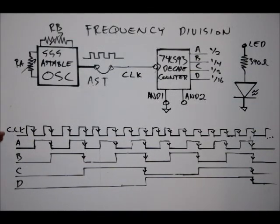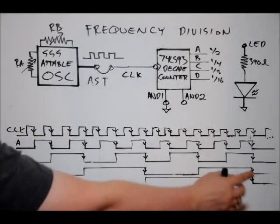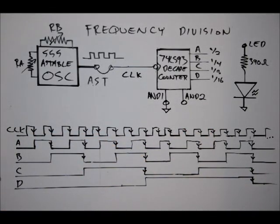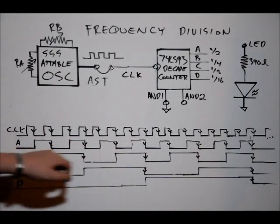So each one looks at the previous output as its input clock. So really, for the 16 pulses here, D is only high for eight of them. So it's essentially 1/16th. This is one pulse. So it's 1/16th of our clock right here.